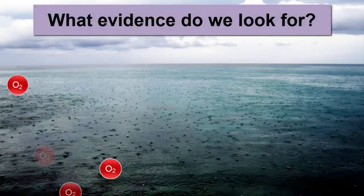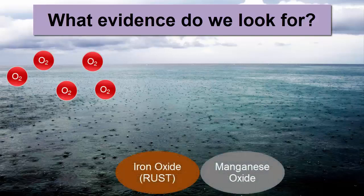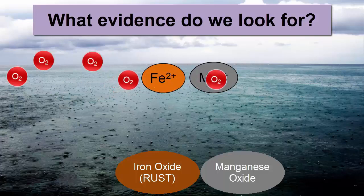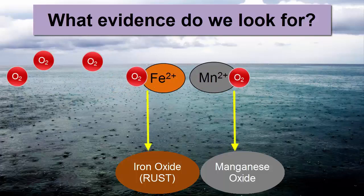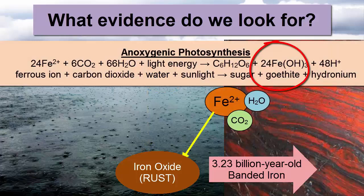What evidence would we look for to tell us oxygenic photosynthesis had evolved? Minerals such as manganese or iron oxides that form through chemical reactions between oxygen gas and either dissolved metals in the oceans or metals in weathering surface rocks on land. While as far back as 3.23 billion years ago there appeared to be small localized precipitations of iron oxide minerals on the seafloor, now visible in layered rocks known as banded iron formations, additional evidence suggests those were formed as a byproduct of anoxygenic photosynthesis by bacteria that used iron as an electron donor.